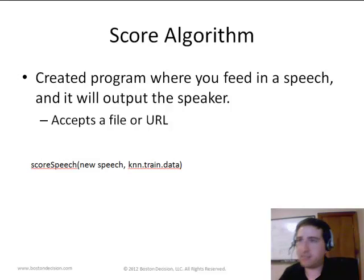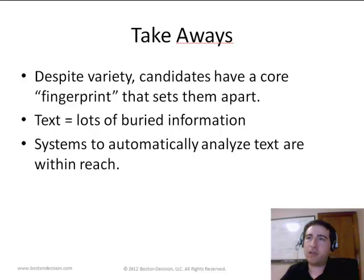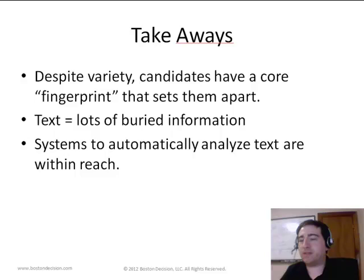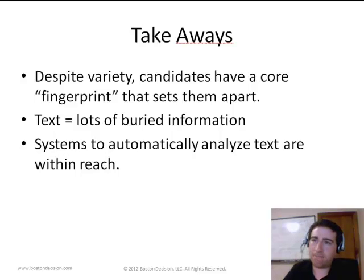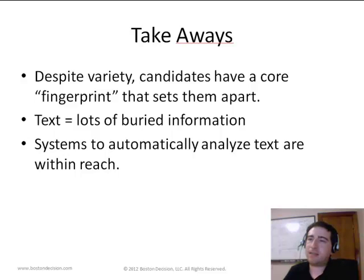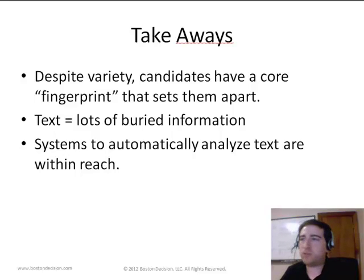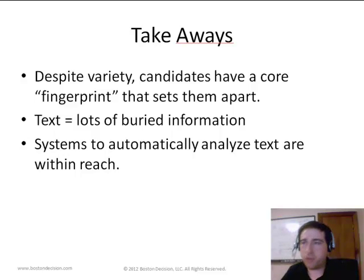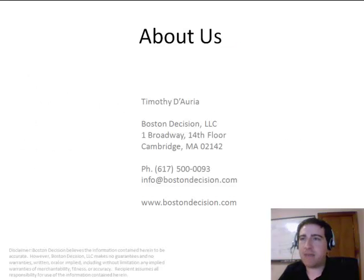This is just a simple example of the types of things you can do with text mining. The takeaways are: number one, despite variety in what candidates say across speeches, they tend to have a core fingerprint — a persistent linguistic pattern across speeches and time. Text has a lot of buried information, and about 80% of the global data we're exposed to is unstructured. Finally, systems that enable folks to automatically analyze text are within reach. All the tools used here are open source with no licensing cost, and applicable to so many different problems. Thank you very much for your time.